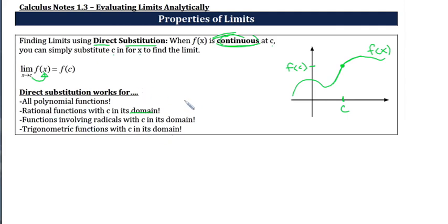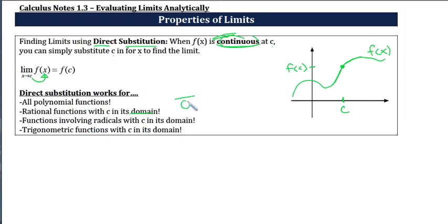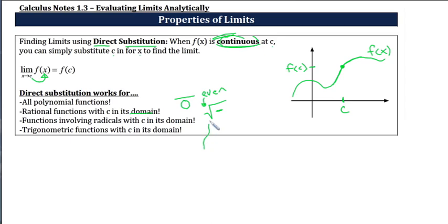Some things to watch out for in rational functions is the dreaded division by zero — that is the only time direct substitution won't work. For functions involving radicals, if you have an even index you cannot have a negative under the radical, so we can't take the square root of a negative number. For trigonometric functions, watch out for things like the tangent function, where there are places the function is not defined.